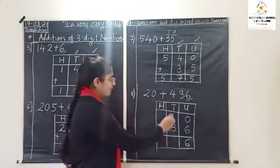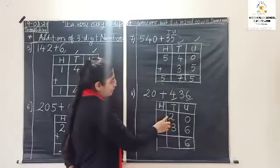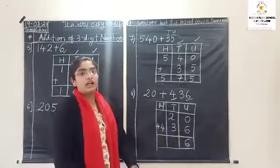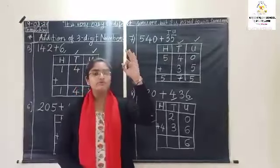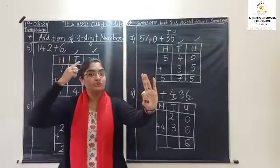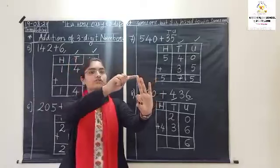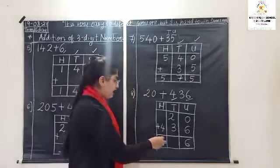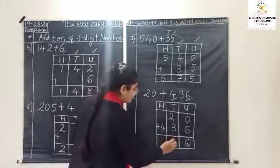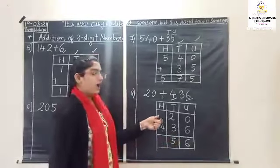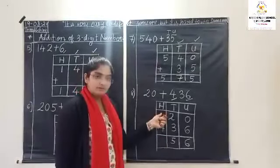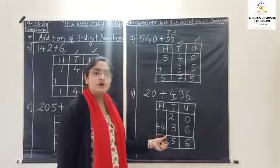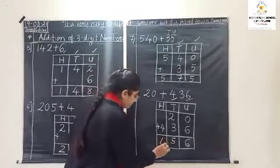Next, come to tens: two plus three. Keep two in mind, remove three fingers. After two: three, four and five. So the answer is five. Above, there is no number — means zero plus four is four.